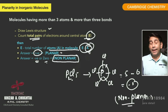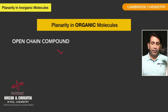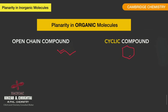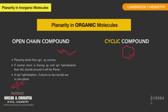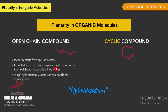This is the method to check planarity in inorganic molecules. Now let's talk about organic molecules. Planarity in organic molecules: there are two types of compounds — open-chain compounds and cyclic or ring compounds. For open-chain compounds, the basic theme is hybridization. The main component of organic molecules is carbon. If the carbon is SP2 hybrid or SP hybrid, then all bonds around it will be in a plane.